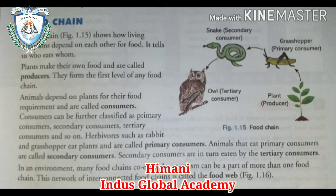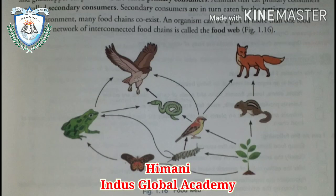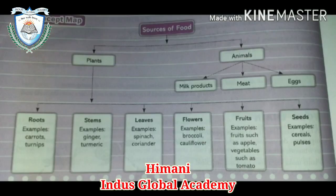Herbivores such as rabbits that eat plants are called primary consumers. Animals that eat primary consumers are known as secondary consumers. Secondary consumers are in turn eaten by tertiary consumers. In the environment, there are many food chains that co-exist. An organism can be part of more than one food chain. This network of interconnected food chains is called the food web, as you can see in the figure.